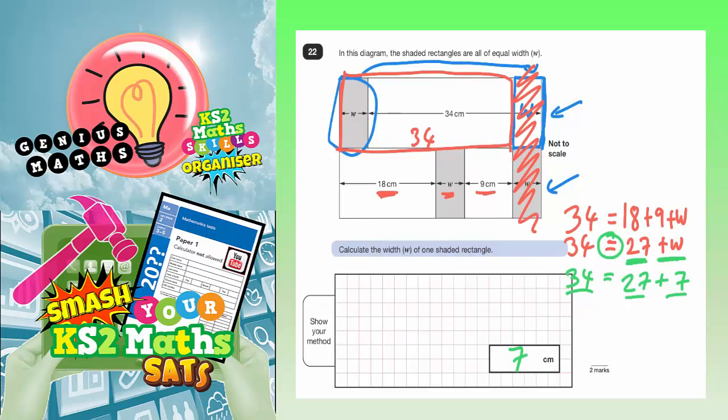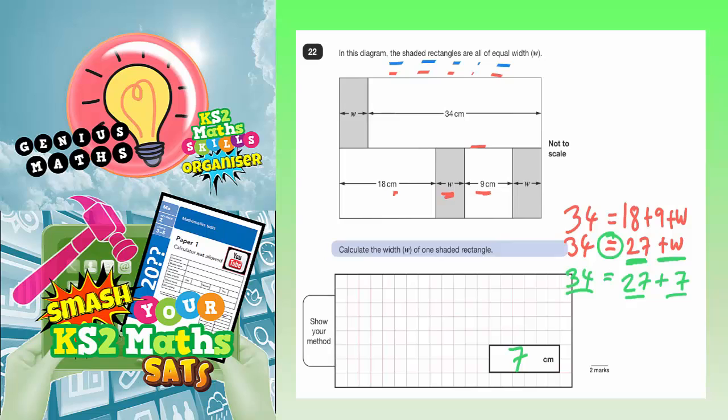Now, let's just go back and check that again. So, let's rub all of this out. We appear to be saying that W is worth 7. Don't forget, this is one of the harder questions on the exam paper.